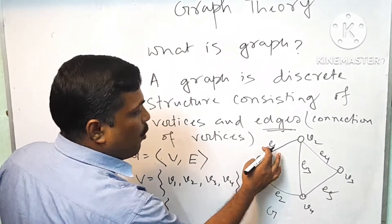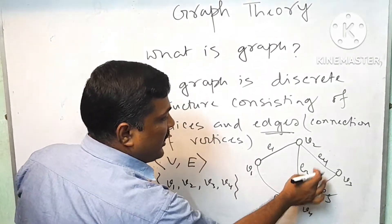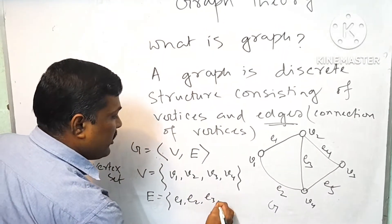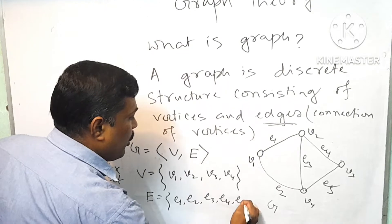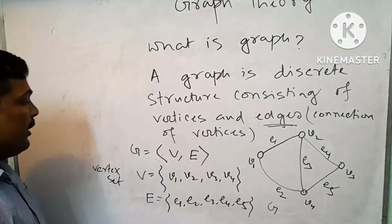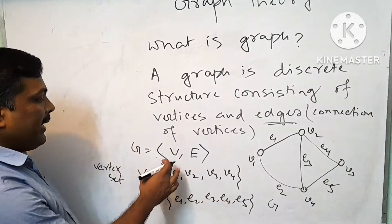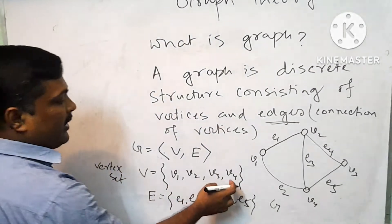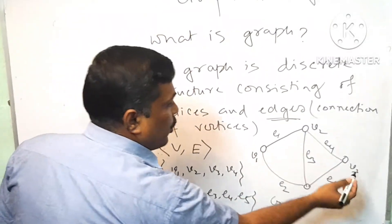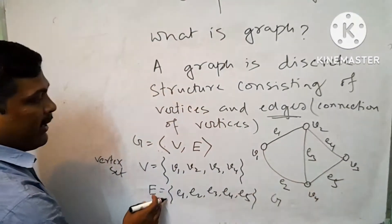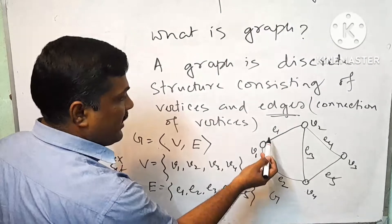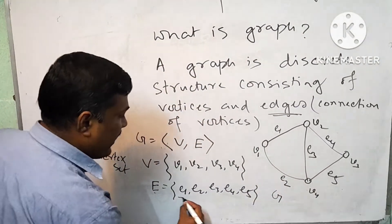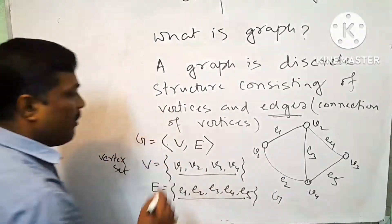The edge set equals to the set of all edges. The edges are E1, E2, E3, E4, E5. So this is the graph G where the vertex set V contains the vertices V1, V2, V3, V4, and the edge set E contains E1, E2, E3, E4, E5. This is the edge set and this is the vertex set.